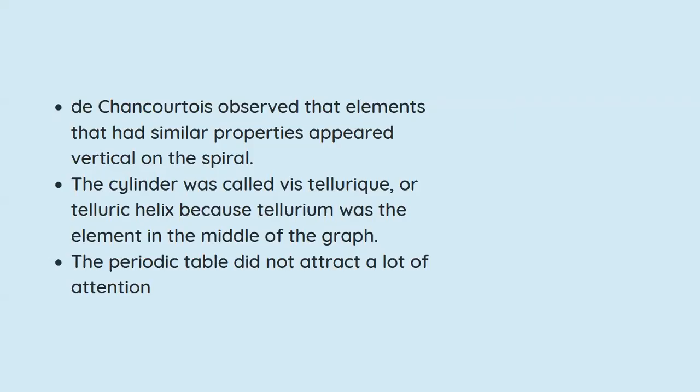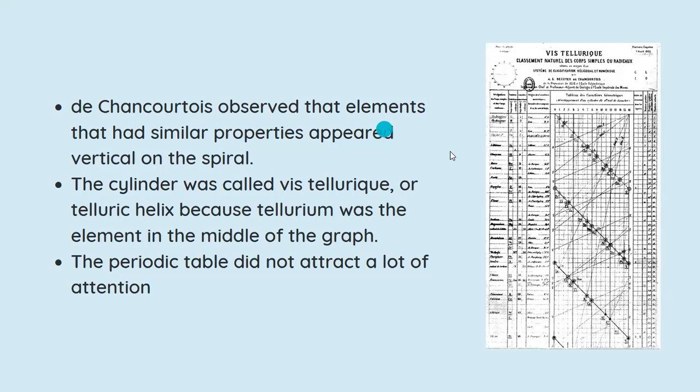First of all, let's look at this. He arranged the elements in the form of a cylinder with 16 units. So there were 16 units - it started from hydrogen and would have gone to oxygen.